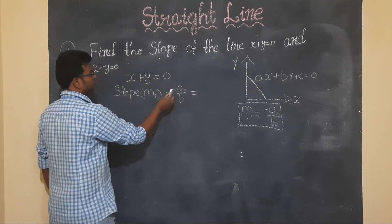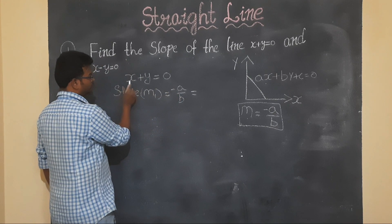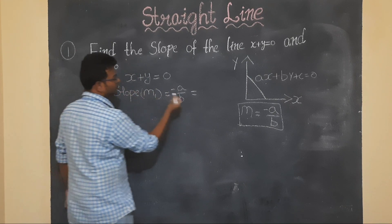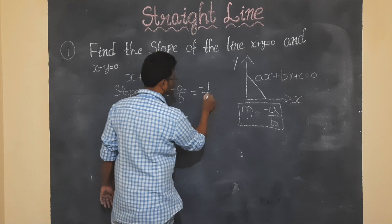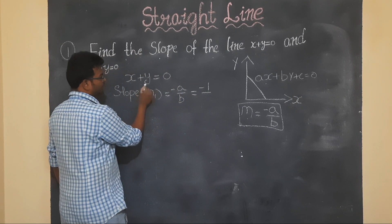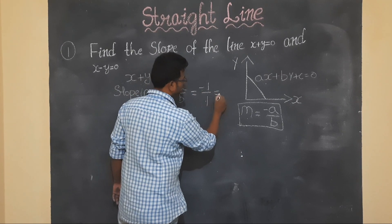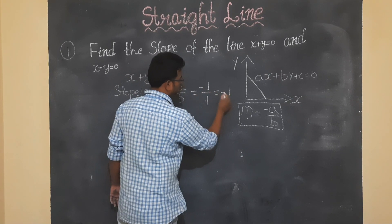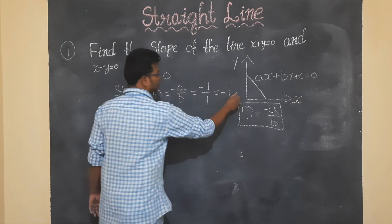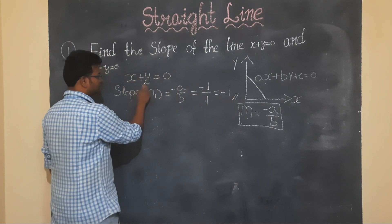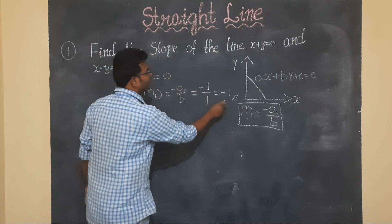So x plus y is equal to 0. So using slope formula minus a by b, a is 1, b is 1, so minus 1 by 1 which is minus 1. So slope of x plus y is equal to 0 is minus 1.